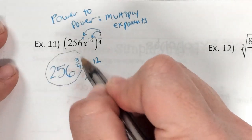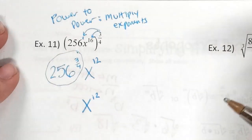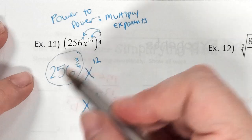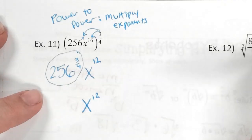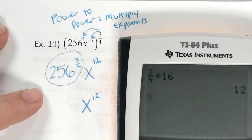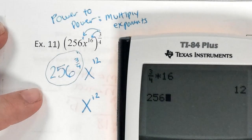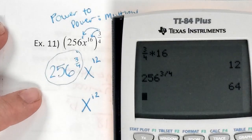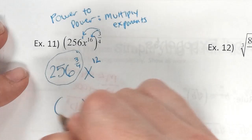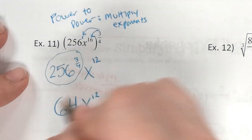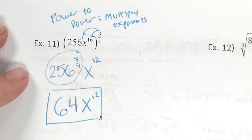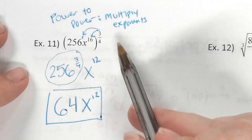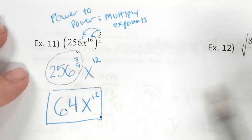I don't know what 256 to the three-fourths equals, so I type it in my calculator. Following the laws of exponents, x to the 12th I already know. If it gives me a pretty number, then I'm done. 256 to the 3 over 4 power gives us 64. And now I'm done. If it was a fraction I would have to do something with it, but it's not.